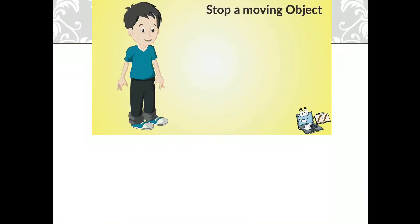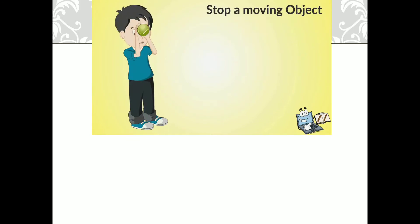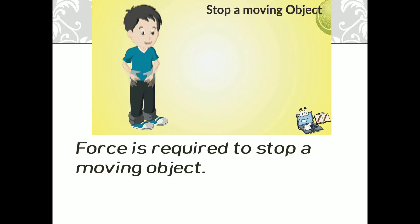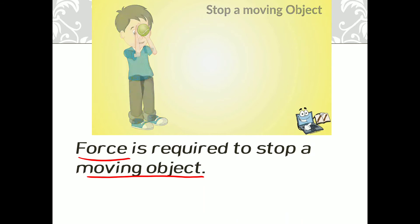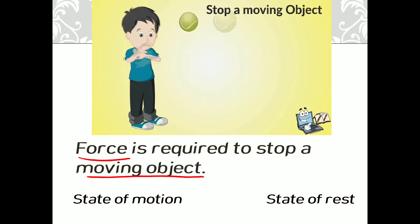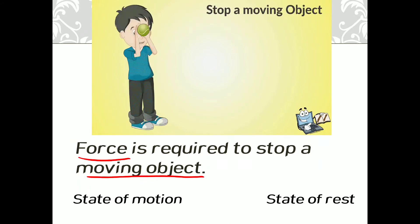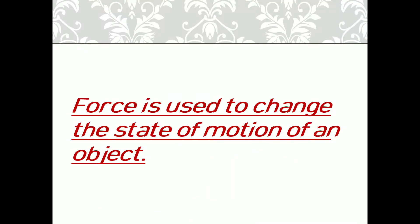What can you see in this picture? The ball which was moving comes to rest due to the force applied by the boy in order to catch it. So we can say that force is required to stop a moving object. The state of motion of the ball has been changed to the state of rest due to the application of force. Finally, force is used to change the state of motion of an object.